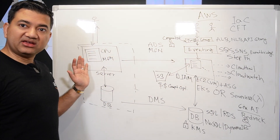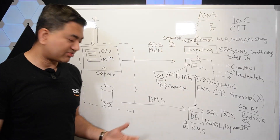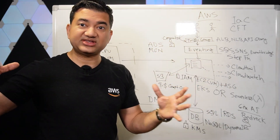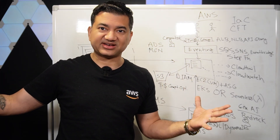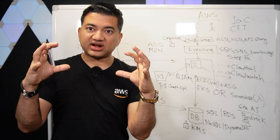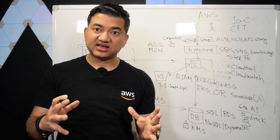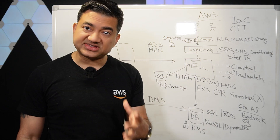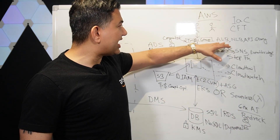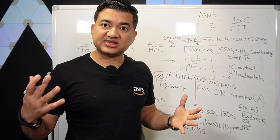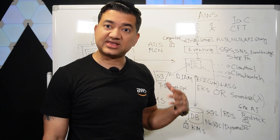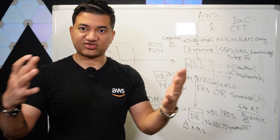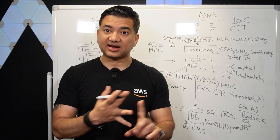Networking: when running your application in a data center, the whole data center is yours — you own all the IP addresses. But in AWS, multiple customers share the same data center, so you need a chunk of IP addresses or a piece of the data center you can control. We call that VPC, or Virtual Private Cloud. You need to understand how to allocate IP addresses in a VPC, what subnets are, what availability zones are, how to tie load balancers and API gateways to specific VPC subnets, and how traffic comes in from the internet.